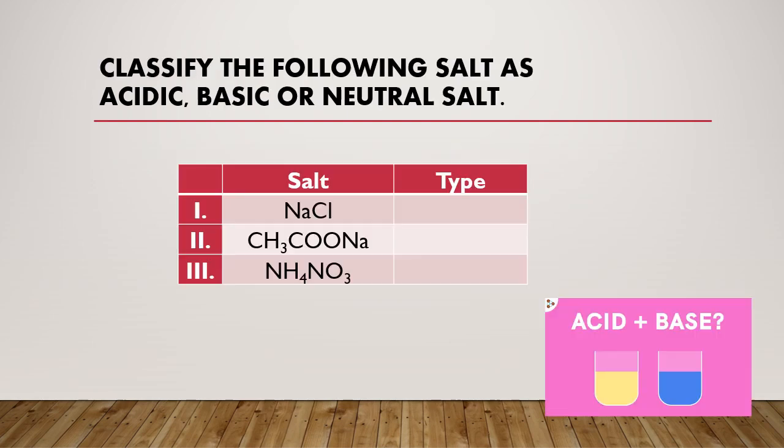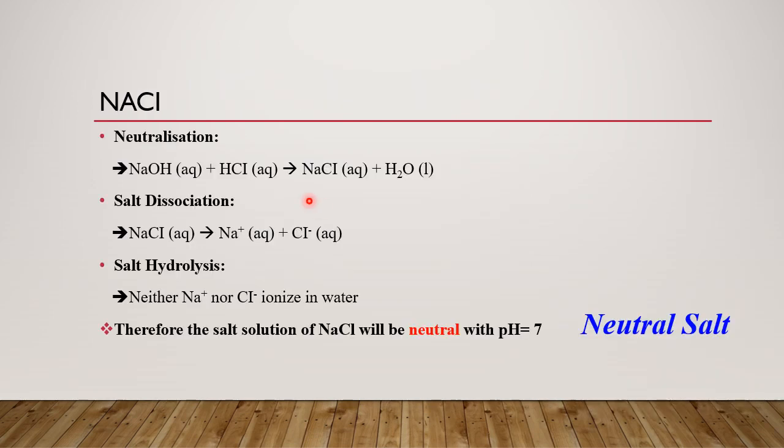Next, classify the following salts as acidic, basic, or neutral salt. So sodium chloride, sodium ethanoate, and ammonium nitrate. So before we answer this question, I will give you some idea how the salt is formed. The salt actually is formed from the reaction between acid and base that will produce salt and water. So now we have to identify what type of salt will be produced. Let's check the steps in solving this problem. First I will write down the neutralization equation over the type of acid.